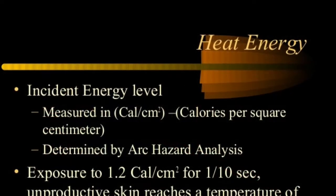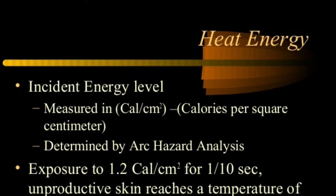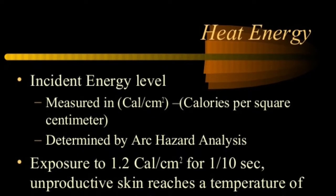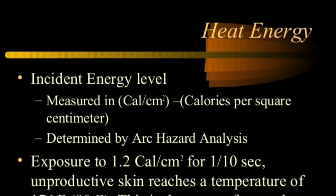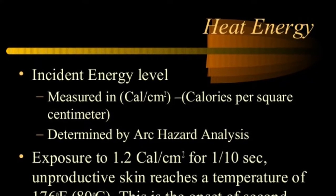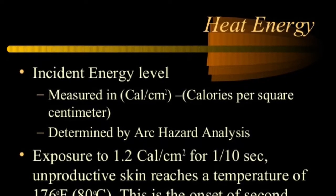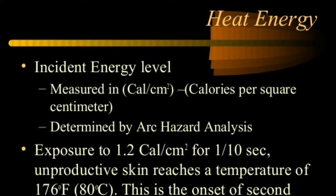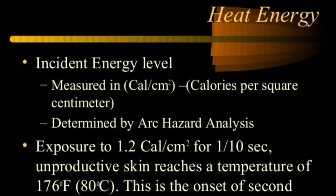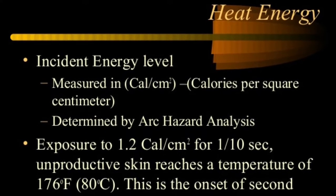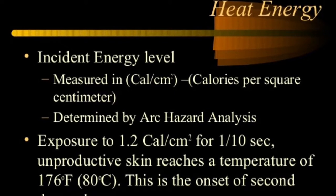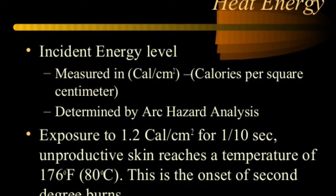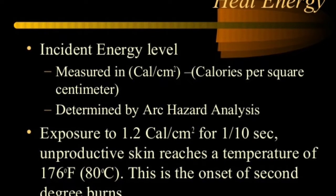Incident energy is the amount of thermal energy impressed on a surface a certain distance from the source generated during an electrical arc event, typically expressed in calories per square centimeter. Predicting the amount of available incident energy is crucial in selecting appropriate PPE. Properly rated PPE prevents injury from melting or burning clothing or from direct skin exposure due to the increased temperature during an arc ring fault.